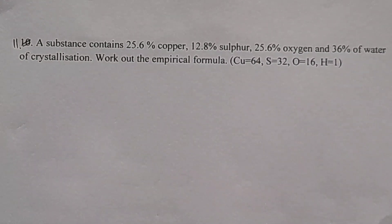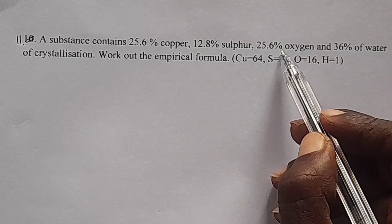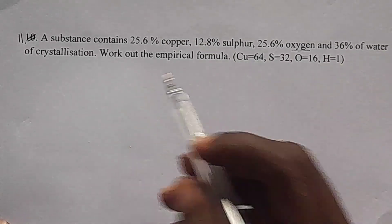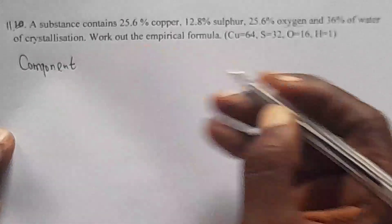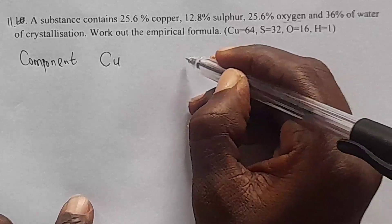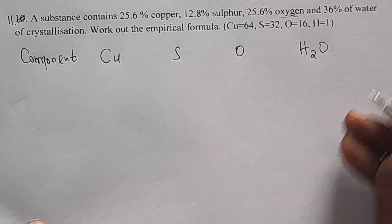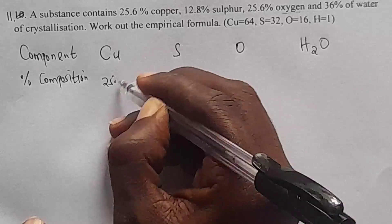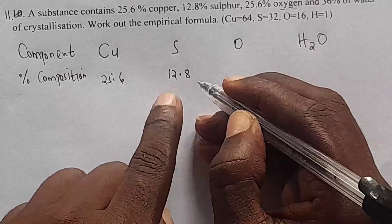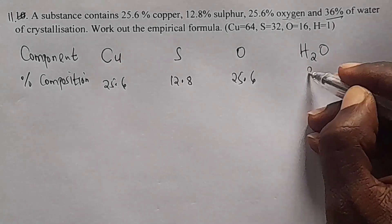Then we go to question 11. The question is: a substance contains 25.6% copper, 12.8% sulfur, 25.6% oxygen, and 36% water of crystallization. Work out the empirical formula. So the components are copper (Cu), sulfur (S), oxygen (O), and water of crystallization (H₂O). The percentage compositions are: copper 25.6%, sulfur 12.8%, oxygen 25.6%, and water of crystallization 36%.